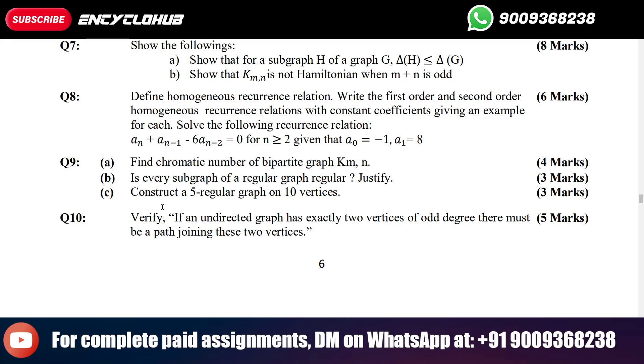Hey guys, welcome back. Today we will see the MCA 003 assignment from the MCA course. Question number 9 is divided into three parts: finding chromatic number of a bipartite graph Km,n, whether every subgraph of a regular graph is regular.